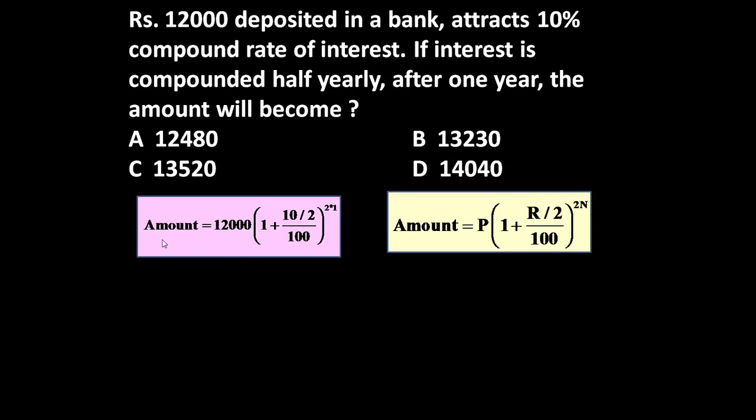So let us put all these values in this. Amount is equal to P is 12,000, 1 plus rate of interest R is 10, 10 by 2 upon 100, power 2 into N. Number of years is 1 after 1 year. So amount is equal to 12,000 into 1 plus 10 upon 2 divided by 100 power 2 into 1.